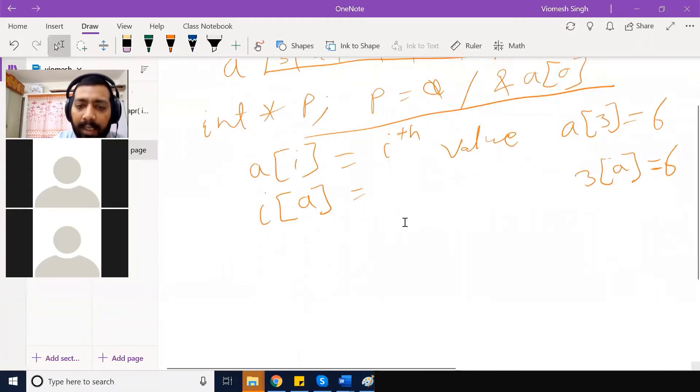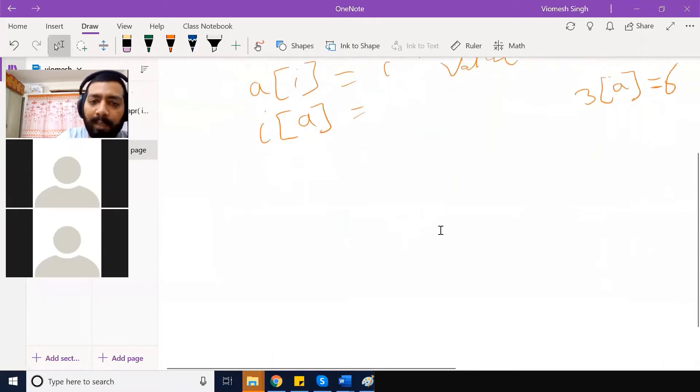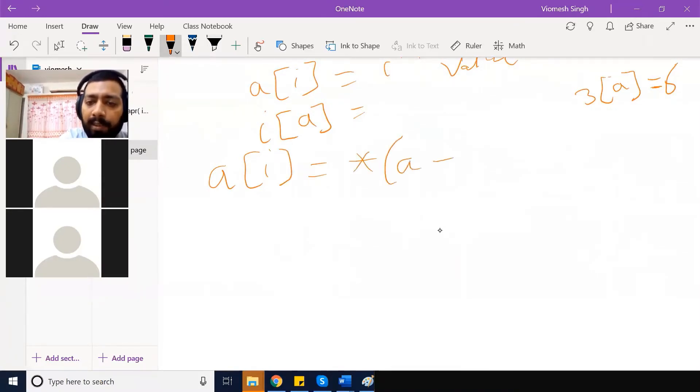Why? Because, let me show you how compiler work. A of i is treated as star of a plus i. A of i is treated as star of a plus i. We have already seen with the p plus i in the previous example. A of i is represented as star of a plus i.